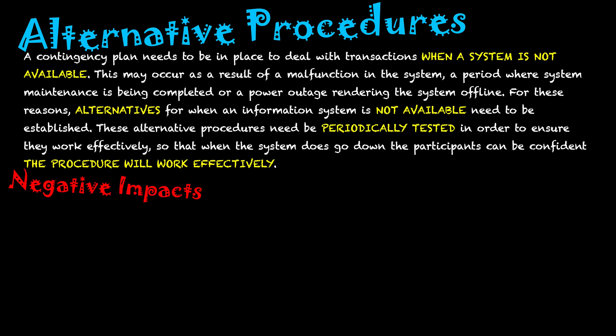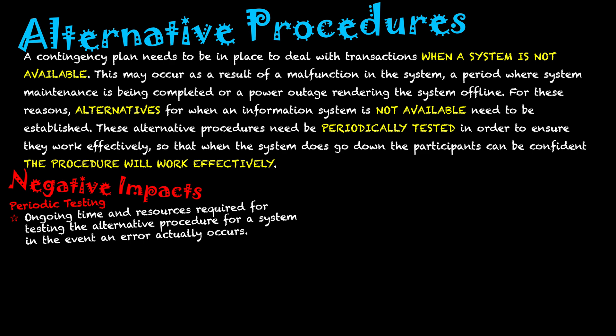Let's look at some of the negative implications. The first is periodic testing — you're putting in ongoing time and resources required for testing the alternative procedures in the event of an error actually occurring. We're essentially maintaining this contingency even though the scenario may hopefully never happen, and that costs money. We're taking people off their jobs to train them, which costs money to maintain.